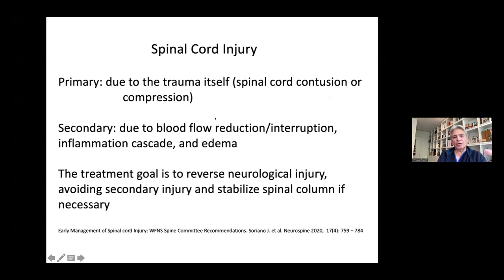The spinal cord injury can be defined as a primary lesion due to the trauma itself — spinal cord contusion or compression — and a secondary lesion due to blood flow reduction, interruption, or inflammation cascade and edema. The treatment goal is to reverse neurological injury, avoid secondary injury, and stabilize the spinal column if necessary.